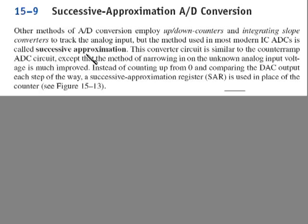This converter circuit is similar to the counter ramp ADC, except the method of narrowing in on the unknown analog input voltage is much improved. Instead of counting up all the way from zero to the max, the successive approximation register is used in place of the counter. So let's take a look at the circuit for that.